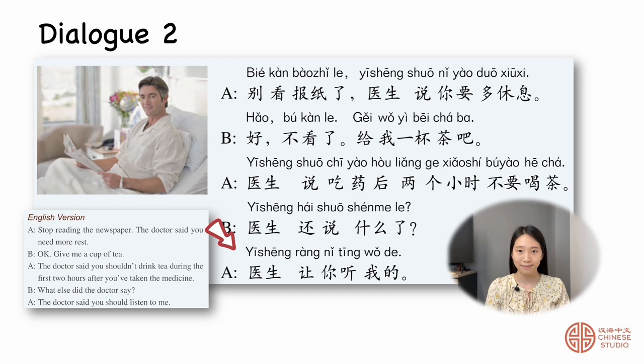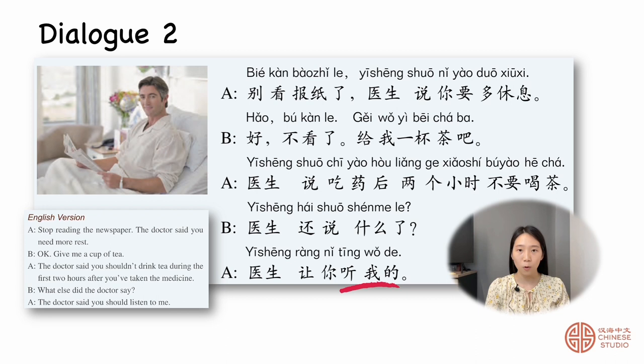Now I want to explain some terms. 报纸 — newspaper. 给 — to give. 两个小时 — two hours. 听我的 — listen to me.